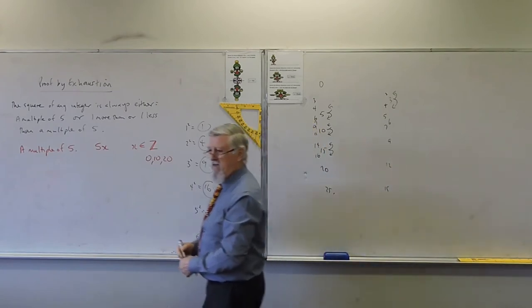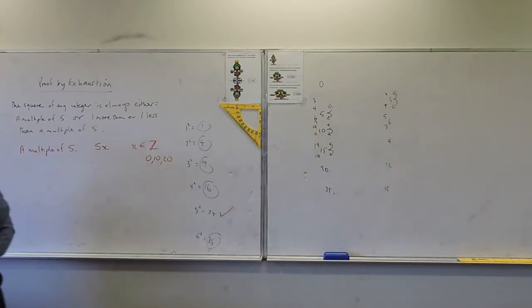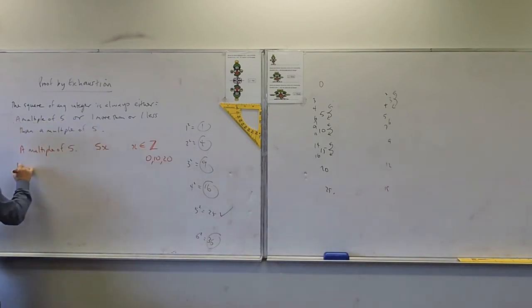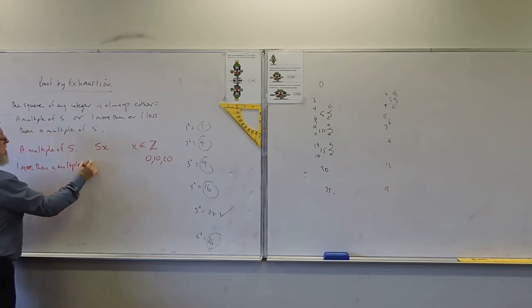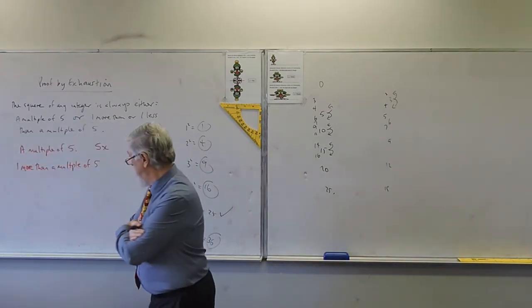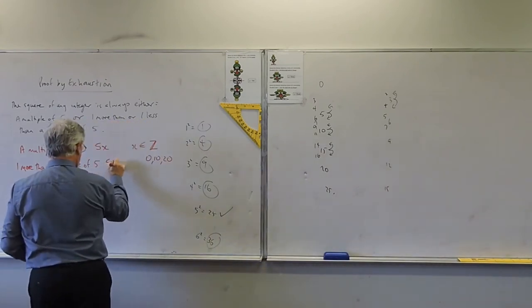It's just 5X. What's the other situation we've got to deal with? How can we get one more than a multiple of five? 5X plus one. Can you write down the rest of them?